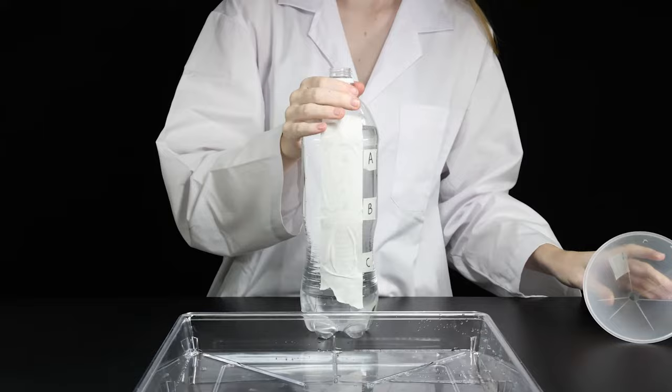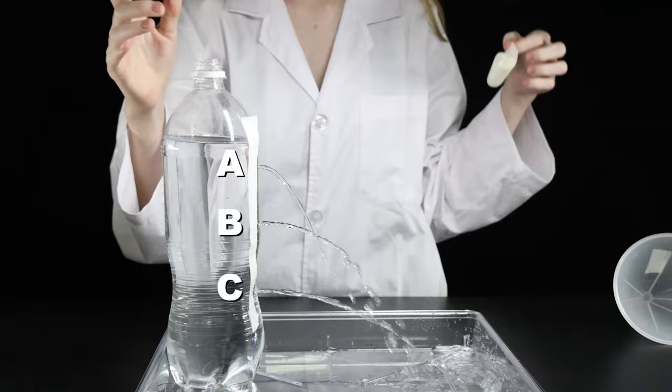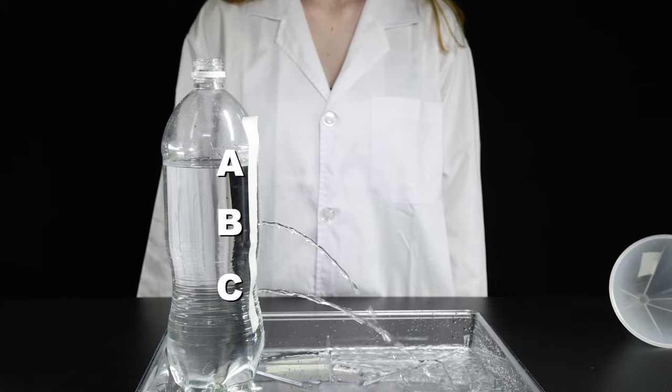Place the tray at the base of the bottle and quickly remove the tape. The water pressure is the least at hole A. The water spurts out the shortest distance.